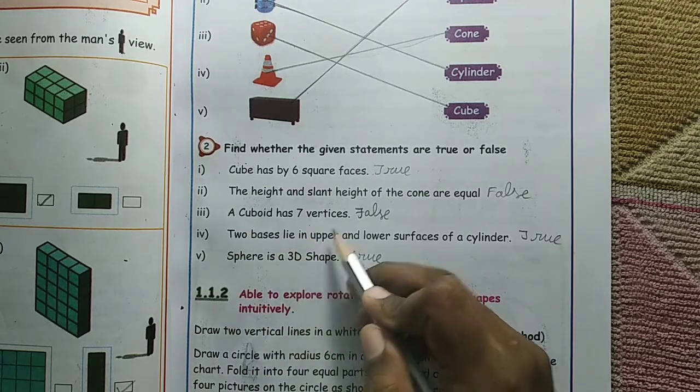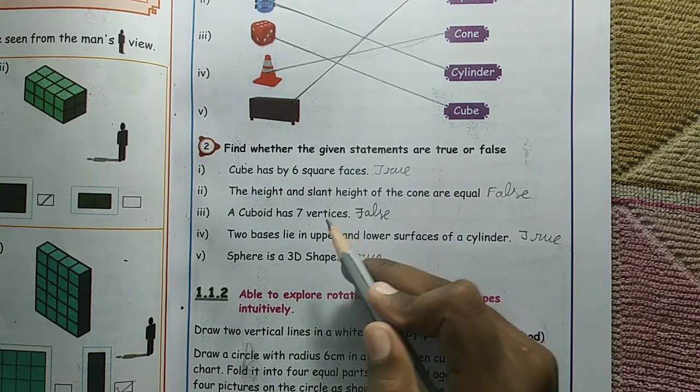A cuboid has seven vertices. No, it has eight vertices. False.